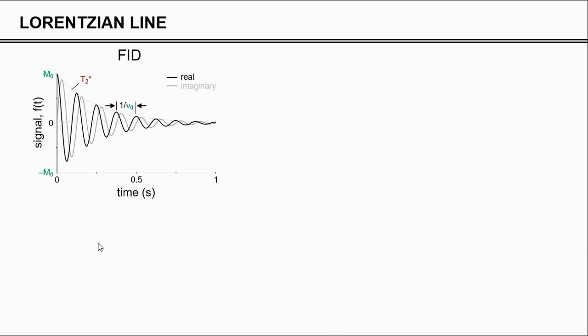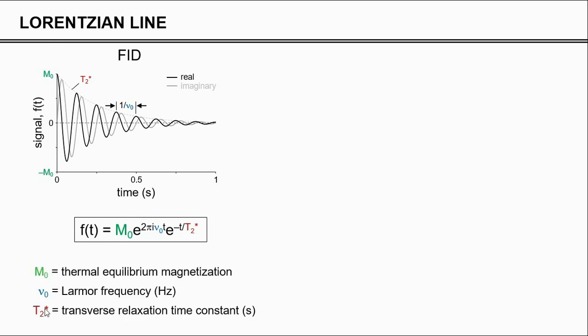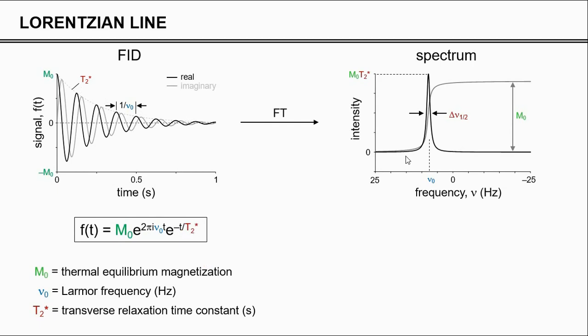Let's have a look at our parameters again, see if we can still recognize those. In the time domain, M0 was equal to the first point, the frequency was 1 divided by the period, and T2 star is this decay. The mathematical function was as follows, where you have M0 times a complex exponential describing the frequency, times an exponential for the exponentially decaying T2 star relaxation, and the three parameters. If we do Fourier transformation, we know that we are going to get our spectrum.